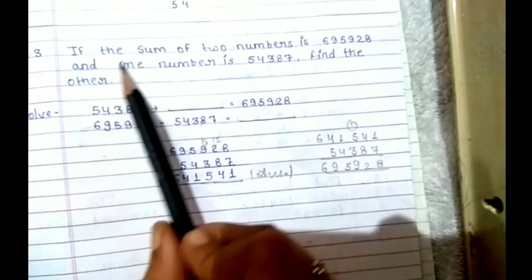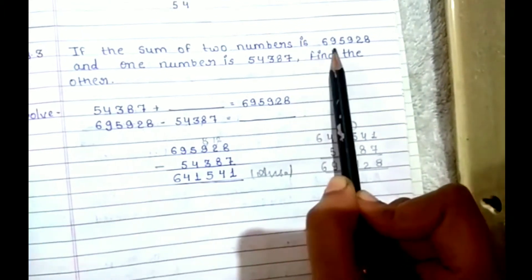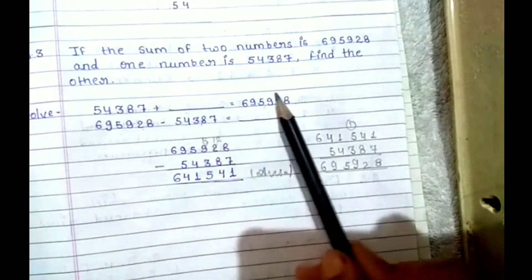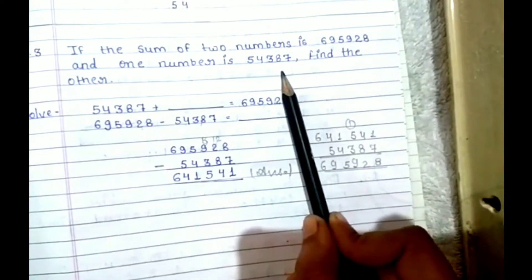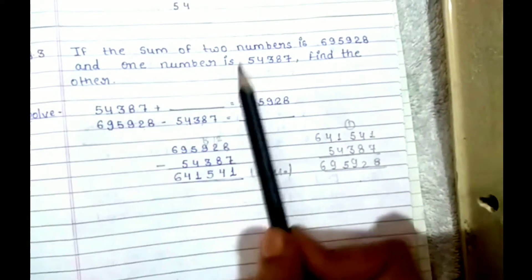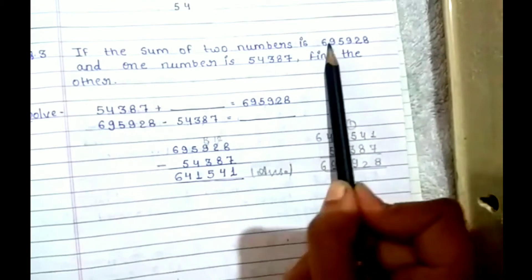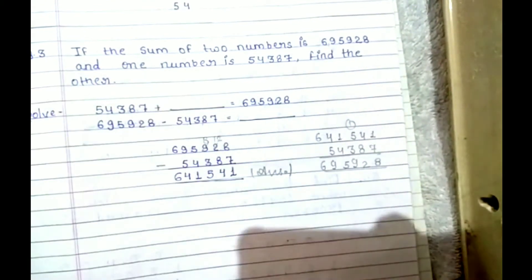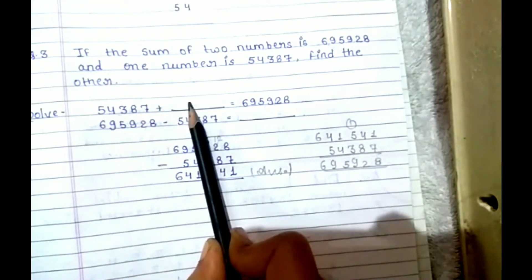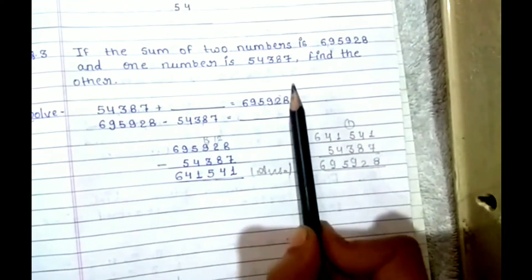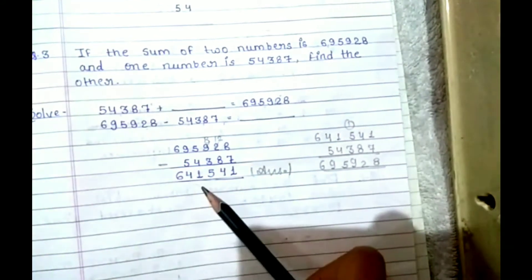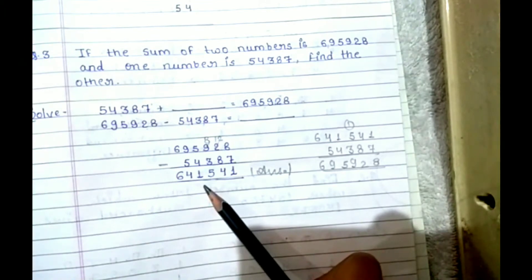Now your third question is: if the sum of two numbers is 6,95,928 and one number is 54,387, find the other. That means आपके पास एक missing addend है और sum ये है, same आपके first और second question की तरह। First addend ये है, second addend अपन को find करना है, तो अपनने again जो आपका total था, उसमें से first addend को minus कर दिया है, तो जो result आ गया वो second addend हो गया।